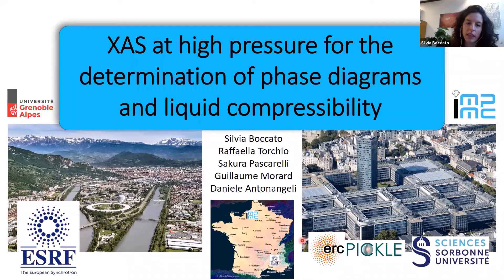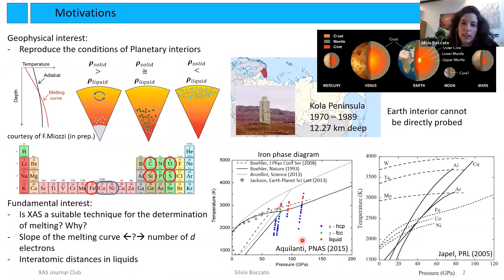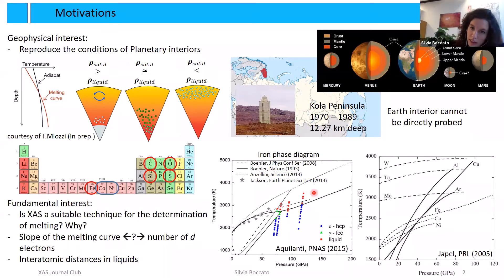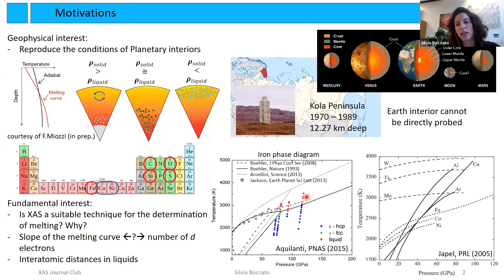Why are we interested in phase diagrams and liquid compressibility? In the last century, humankind tried to dig a hole into the earth, and for 20 years the depth we could reach was only 12 kilometers from the surface, which is less than 0.2% of the earth's radius. Probing a planet like earth directly is not possible, so we are left with other methods such as seismology, or we have to study the materials composing the planet at high pressure and high temperature conditions. Rocky planets, including earth, are composed of iron alloyed with light elements.